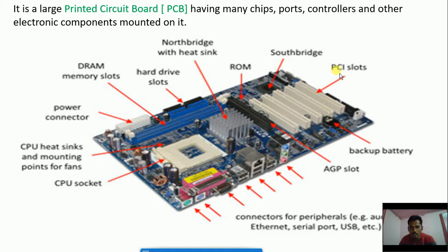The motherboard also has slots - the white colored lines are PCI slots. There are memory slots, hard drive slots, and power connectors. There is also a CPU socket where the processor is placed. I will explain all of these components - socket, processor, slots, ROM - with pictures.